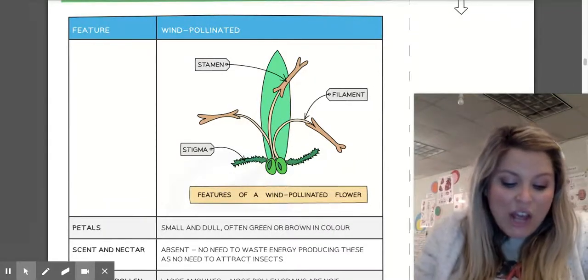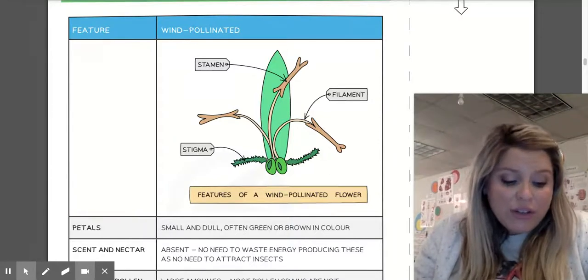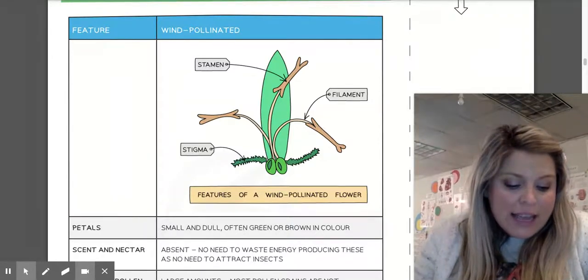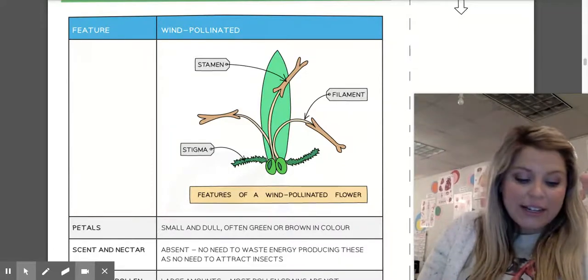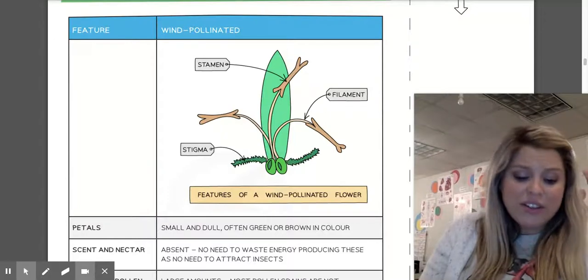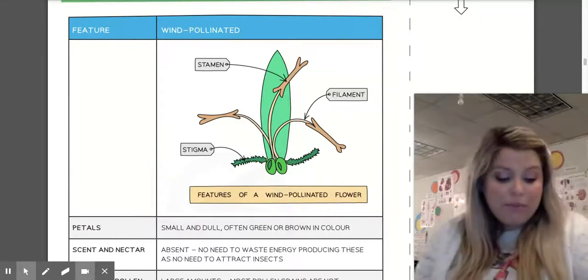For the number of pollen grains though, very large. So large amounts of those pollen grains to better the chance of success with pollination occurring. Their pollen grains are then going to be smooth and small and very light so they can be blown by the wind.